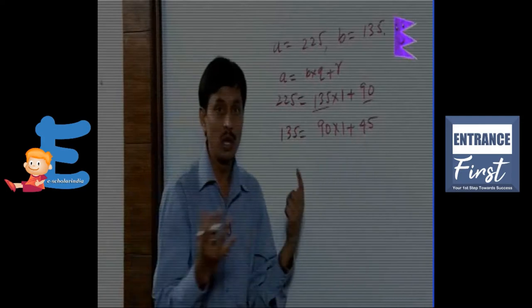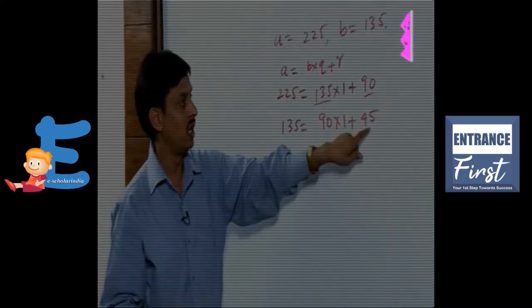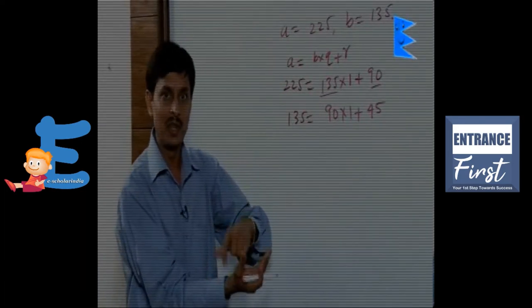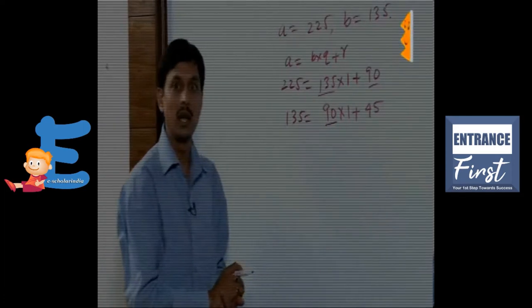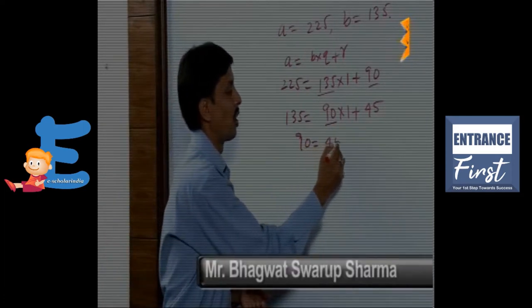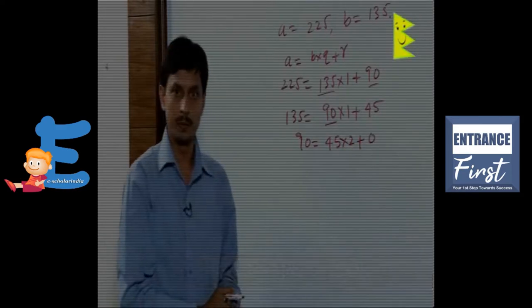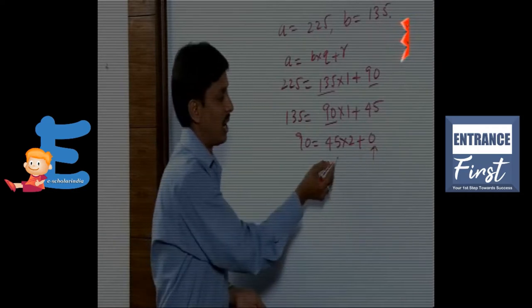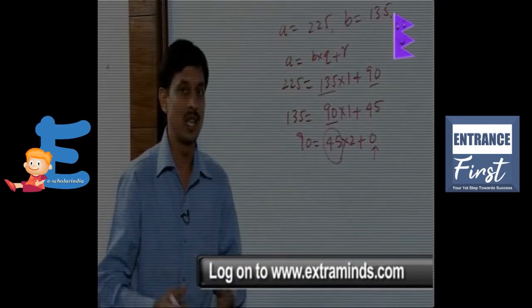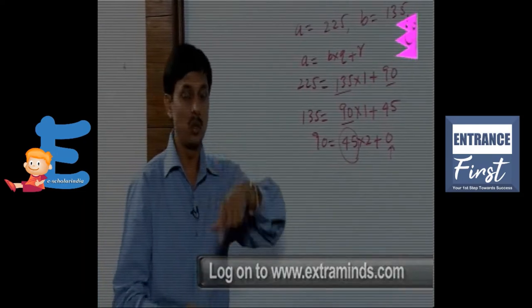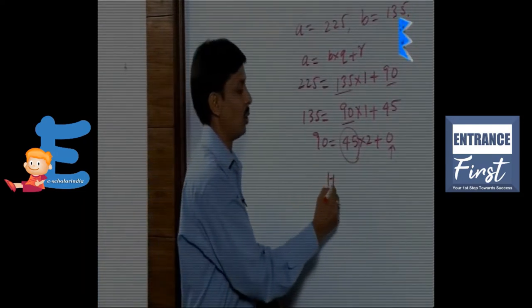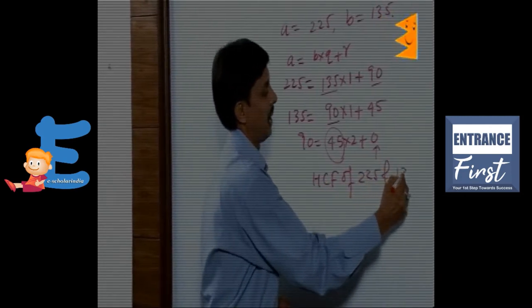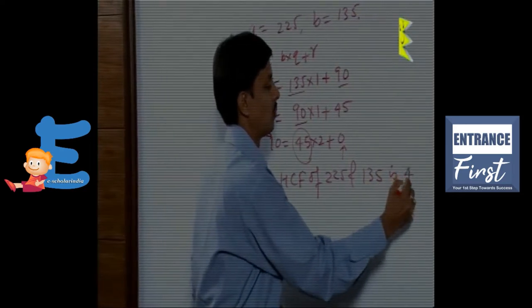Till now the remainder is not zero — in the first step it was 90, in the second step it is 45. For the third step, we consider 90 as A. So: 90 equals 45 into 2 plus 0. The remainder is now 0 and the last divisor is 45. Therefore, the HCF of 225 and 135 is 45.